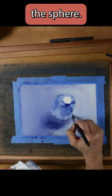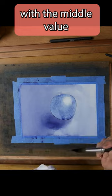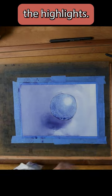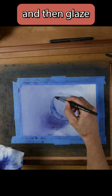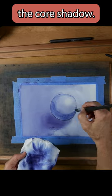Now it's time to paint the sphere. Start with the middle value while you retain the highlights. Let it dry and then glaze with a darker value to create the core shadow.